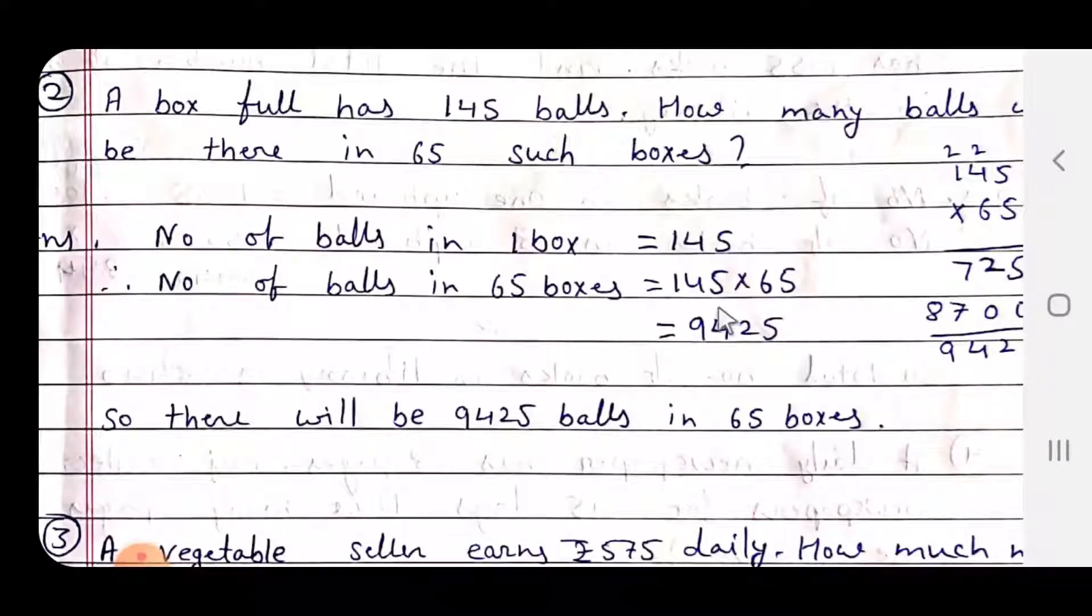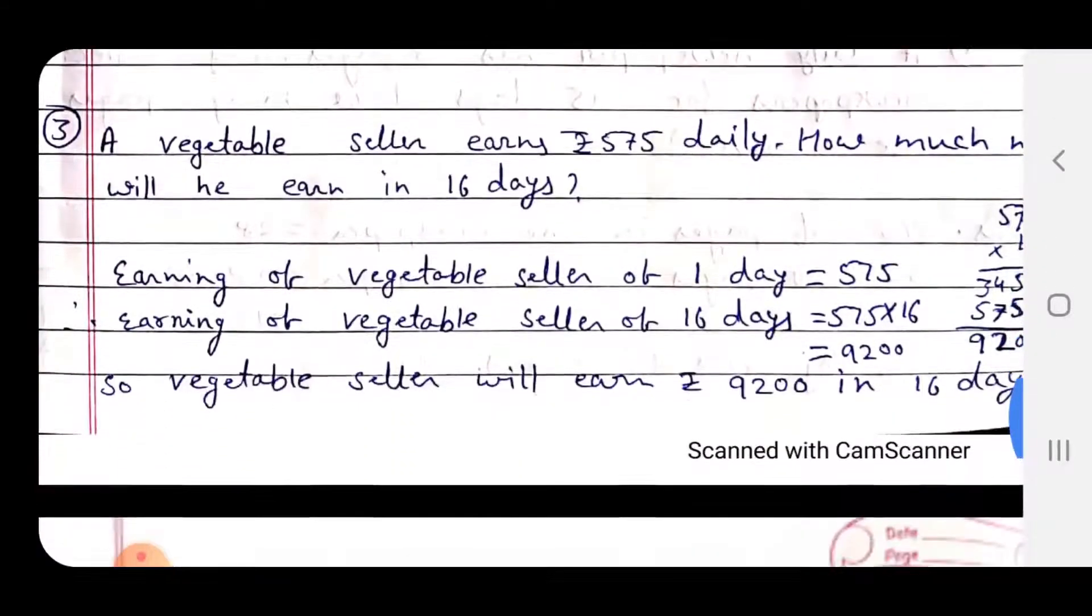In 65 boxes: 145 multiply by 65. 575 x 16 comes to 9200 rupees. So the vegetable seller will earn Rs. 9200 in 16 days.